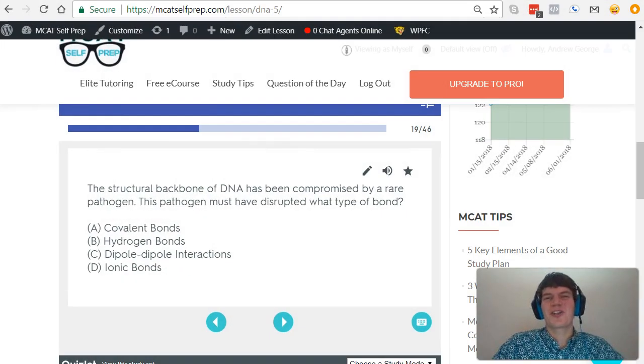Let's take a second look at the question stem. It states, the structural backbone of DNA has been compromised by a rare pathogen. This pathogen must have disrupted what type of bond? And because we're dealing with the structural backbone, we're dealing with phosphodiester bonds, and that means we're dealing with covalent bonds. Answer choice A.